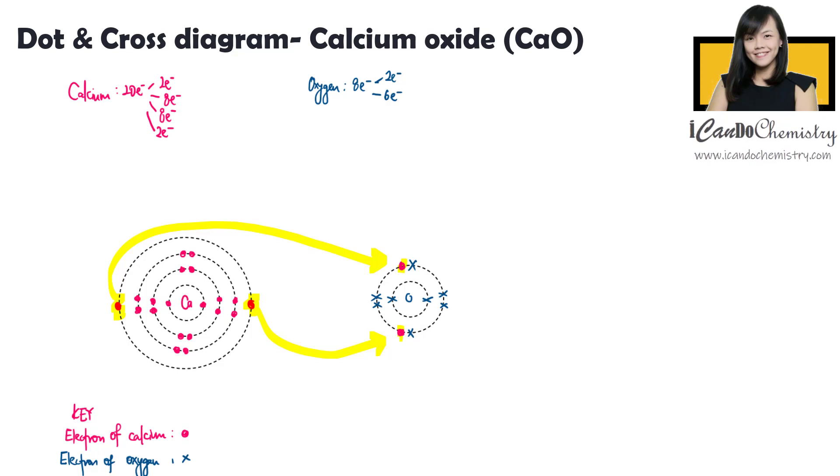Let's work out the charges of the ions. Calcium has 20 protons, which gives it a charge of positive 20, while 20 electrons, which gives it a charge of negative 20. Hence, the overall charge of this atom is zero.